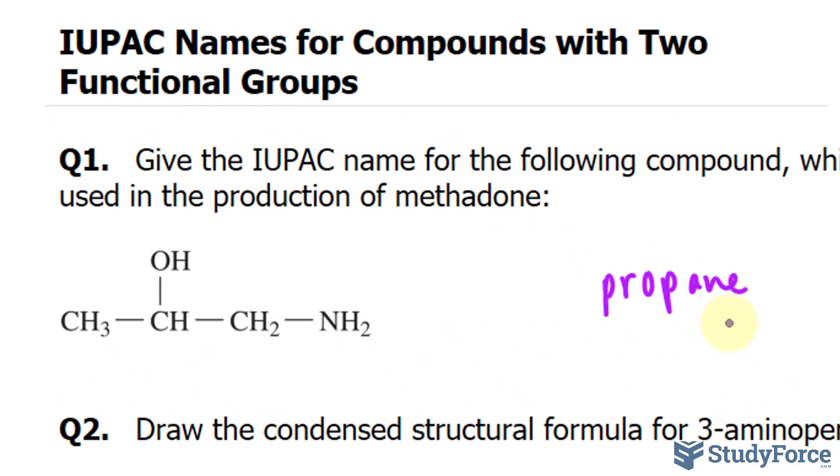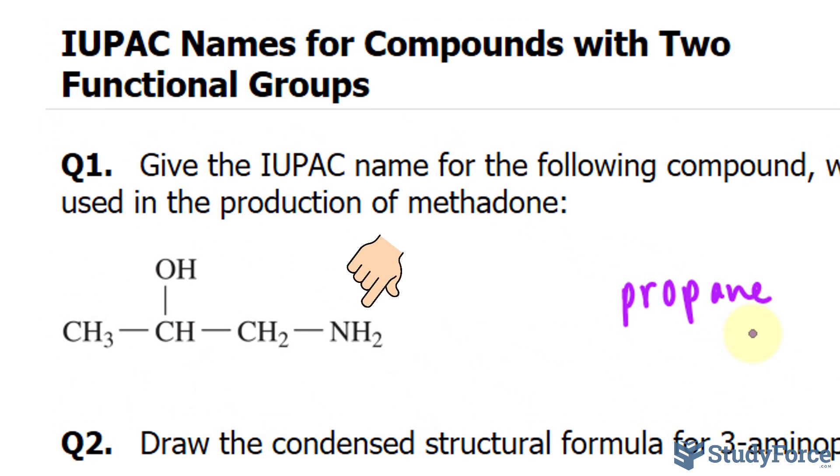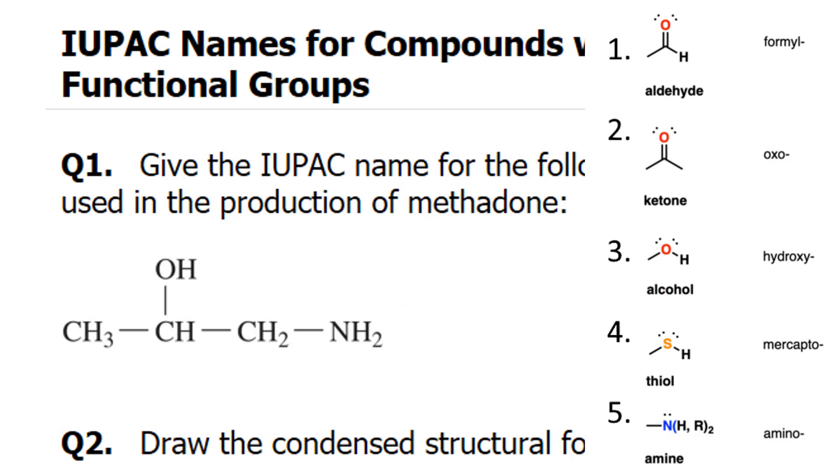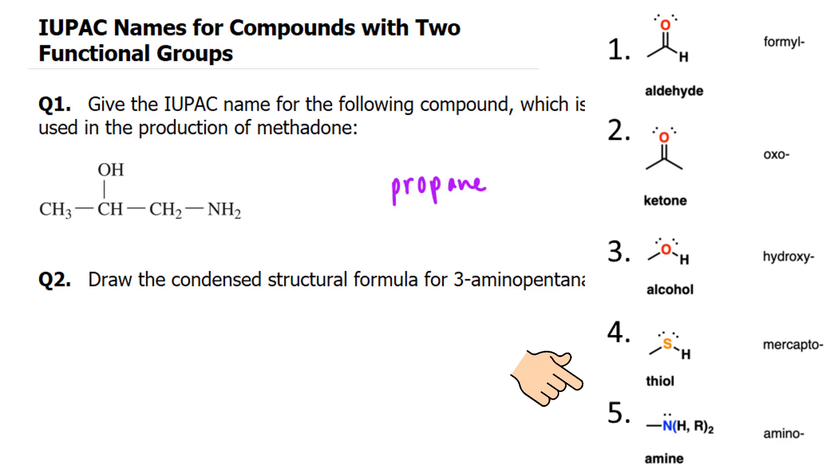The two functional groups that we have here are the OH and the NH2. We have to identify which of these two has the highest priority and use the longest carbon chain to give the compound name. The hydroxyl functional group has higher priority than the amine group, so we'll use that as the base name.